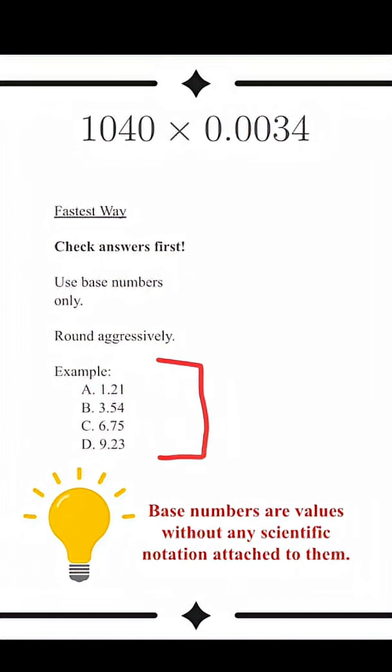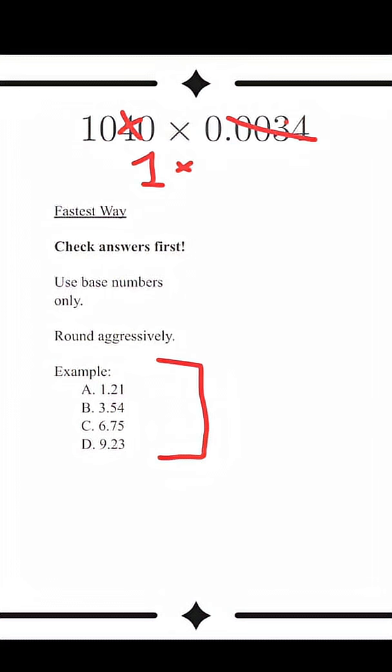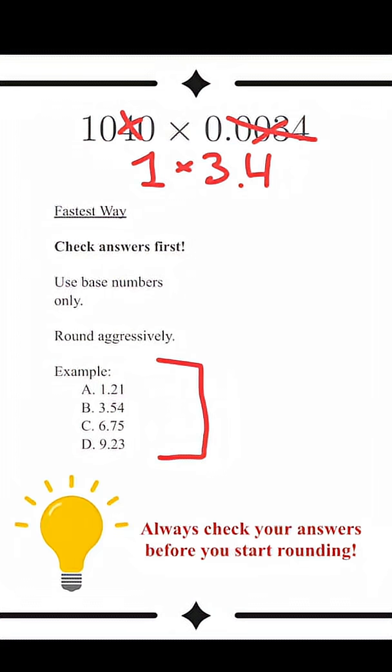That means we can aggressively round our equation. This becomes one and this becomes 3.4. We can do this because we don't need to worry about scientific notation or being precise with our answer here.